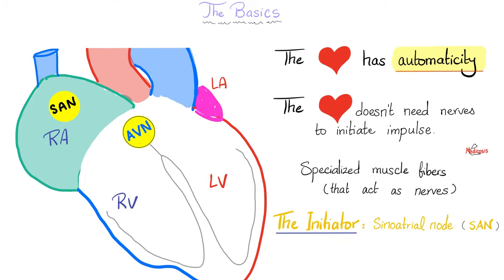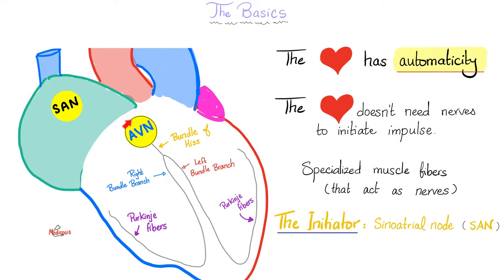The heart has automaticity; it doesn't need any help from outsiders. It can start its own impulses from the sinoatrial node, which is located in the atrium. The sinoatrial node gives impulses to both the left and right atria and to the AV node. The SA and AV nodes are specialized muscle fibers that act like nerves — they are not nerves, but very similar. After the AV node, there is a delay — the impulse must wait there because it is very slow.